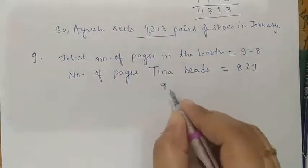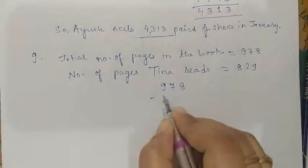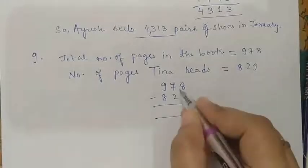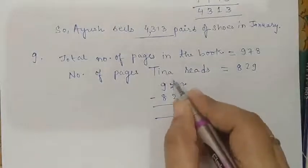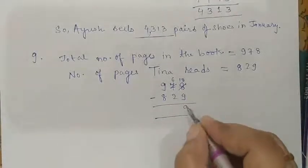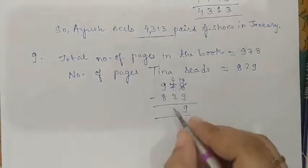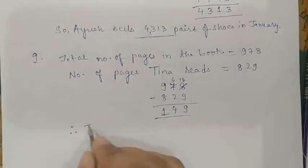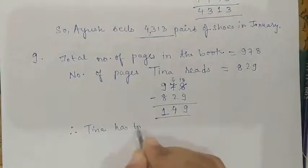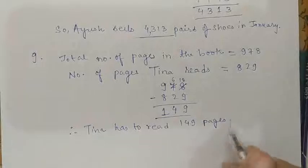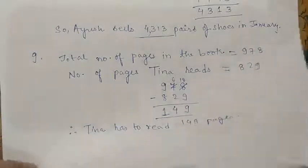For finding the remaining pages we need to subtract. Therefore we will do 978 minus 829. Now we are subtracting: 8 minus 9 we cannot do, so we need to borrow 1 from the 7, which becomes 6. 18 minus 9 is 9. 6 minus 2 is 4. And 9 minus 8 is 1. Therefore, Tina has to read 149 pages.